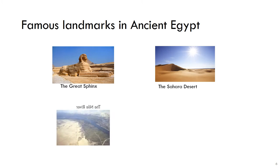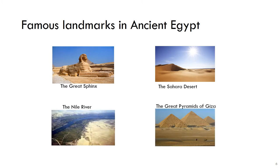Famous landmarks of Ancient Egypt: The Great Sphinx, Sahara Desert, the Nile River and the Great Pyramids of Giza.